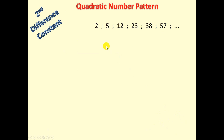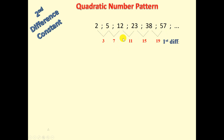Moving on to another example — we're now going to implement the formulas we learned previously. The sequence is 2, 5, 12, 23, 38, 57. The first differences are 3, 7, 11, 15, 19 — not common. The second differences are all 4, so the second difference is common, which makes it a quadratic.